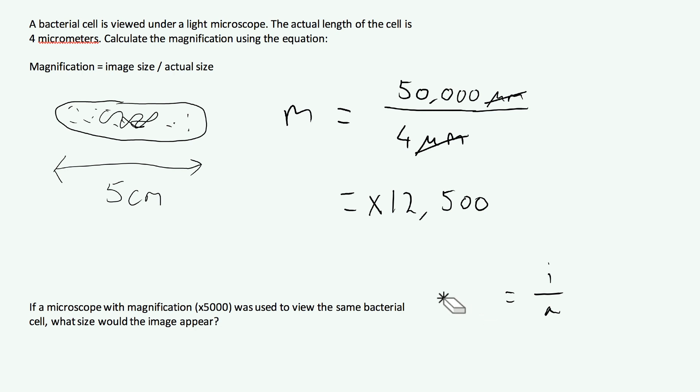Now, magnification, this time we know, is 5,000. Image size is what we're trying to work out, so I'm going to leave it there. The actual size of the cell is still the actual size that we had previously. We're told that the actual size of the cell is 4 micrometres. So that is 4 micrometres.